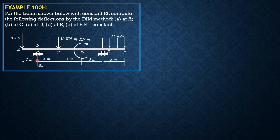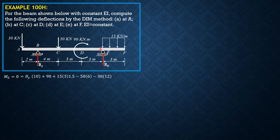First, let's solve for the reactions. Let's call this BY and this one RE. BX is 0, of course. Taking summation of moments about E equals 0: BY times 10 plus 15 times 3 times 1.5 plus 90 minus 50 times 6 minus 30 times 12 equals 0. Solving for BY, BY equals 50.25 kN.